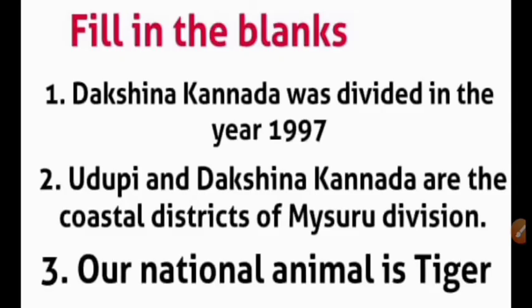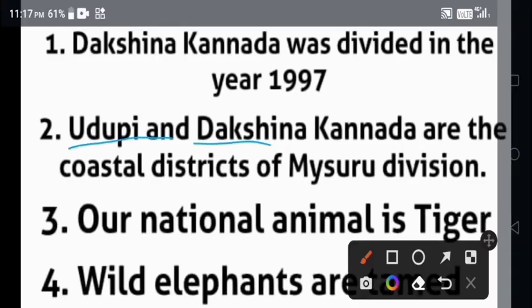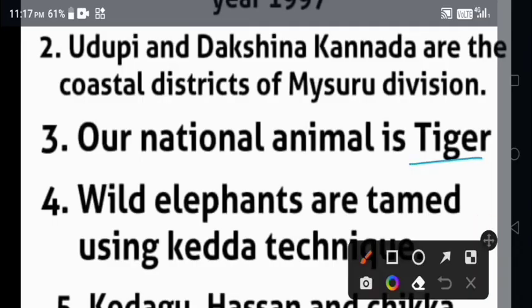Dakshina Kannada was divided in the year 1997 to create Udupi district. Udupi and Dakshina Kannada are the coastal districts of Mysore division. Our national animal is tiger.